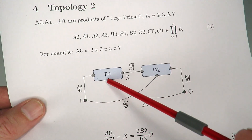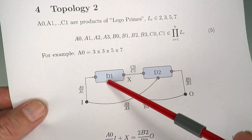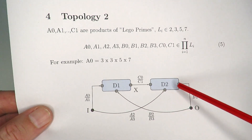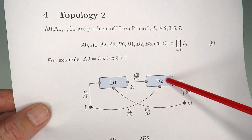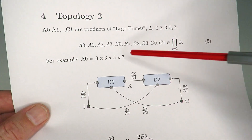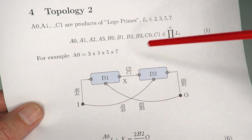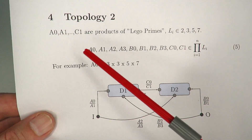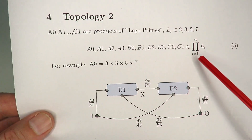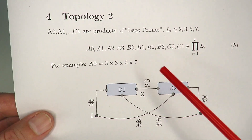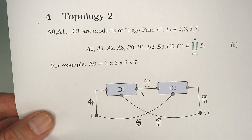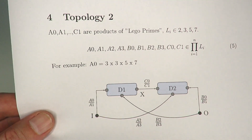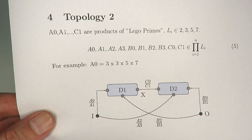On the left we've got A0/A1 and A2/A3 connecting to differential D2. From the output we've got B2/B3 connecting to the barrel of D1 and B0/B1 connecting to D2, with a ratio of C0 to C1 in the middle. All parameters are products of Lego prime — products of any combination of 2, 3, 5, and 7.